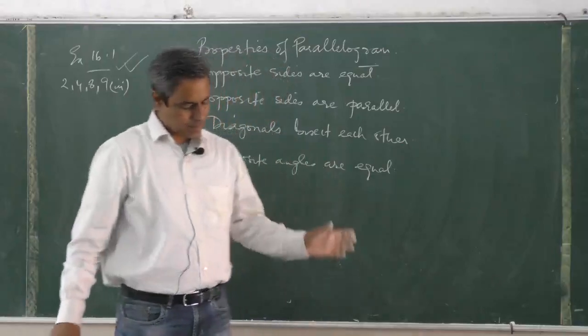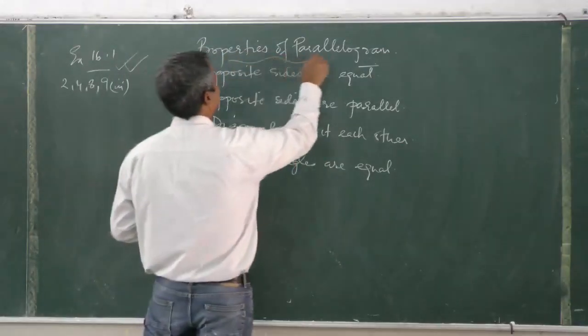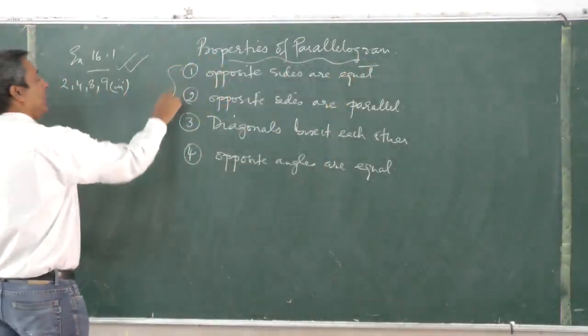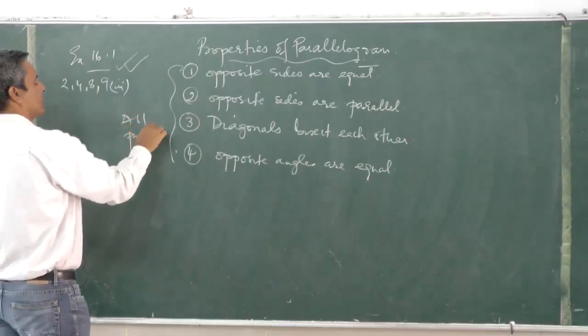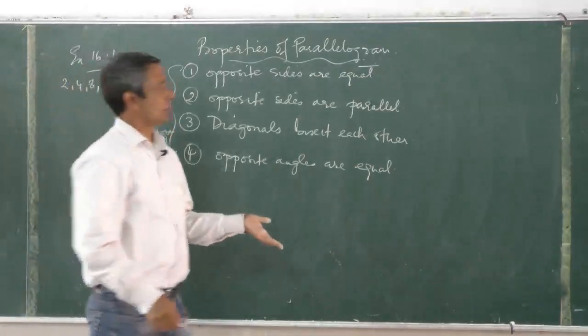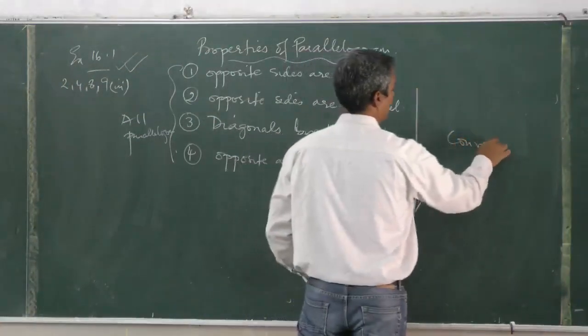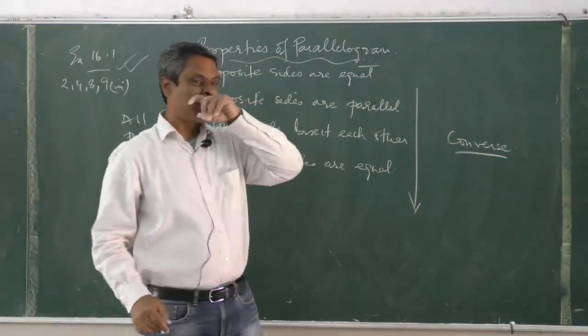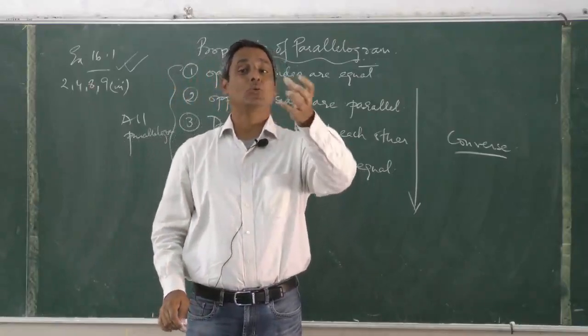Alright, this is true for all parallelograms. This will happen in all parallelograms. Now the converse - what does that mean? The converse means that if you see some special property between any two sides of a quadrilateral or any angles, can you call it a parallelogram?